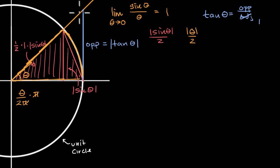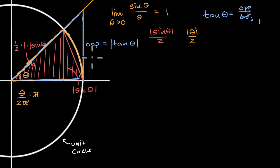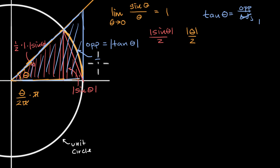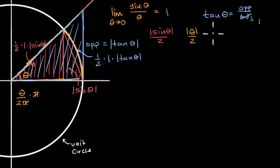Now let's think about this larger triangle in blue. The area is one half base times height. The base is one and the height is |tan θ|, so the area equals |tan θ| / 2.